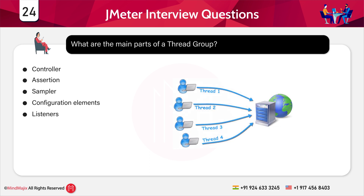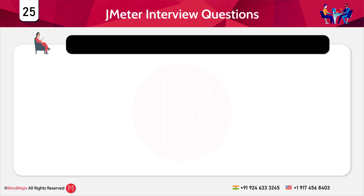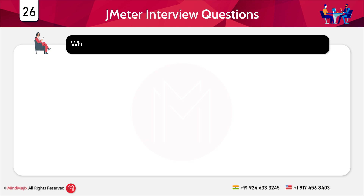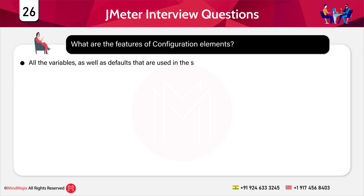The next question is: how are samplers and logical controllers in JMeter different? Both have their own tasks. The sampler ensures all requests are met by the server. On the other hand, the logical controller is responsible for changing the manner in which requests originating from elements are processed. The next question is: what are the features of configuration elements? All variables and defaults used in samplers are created through configuration elements.